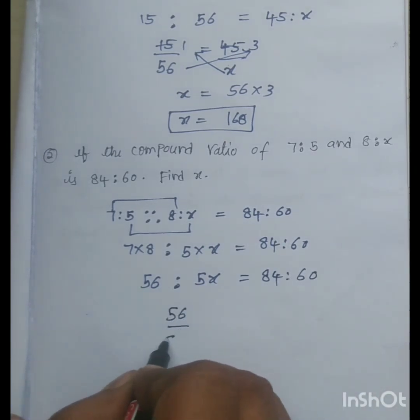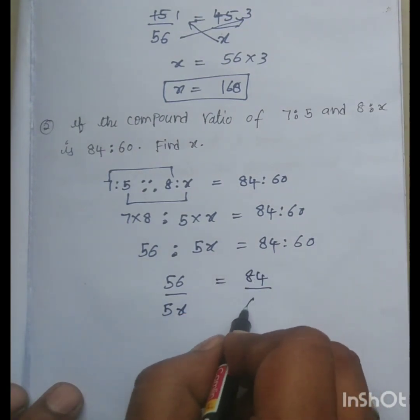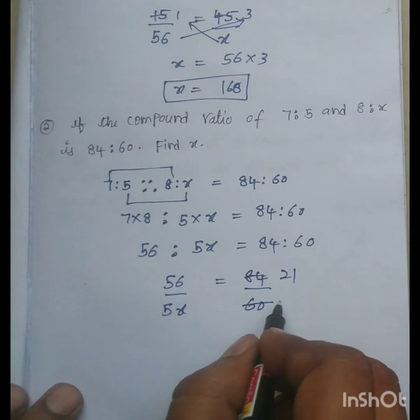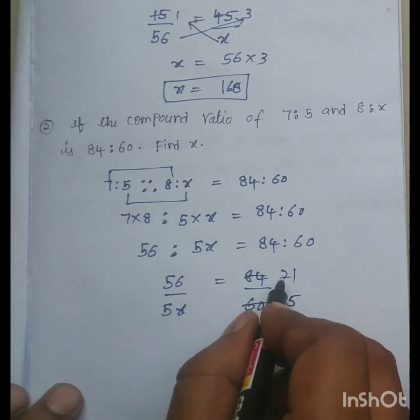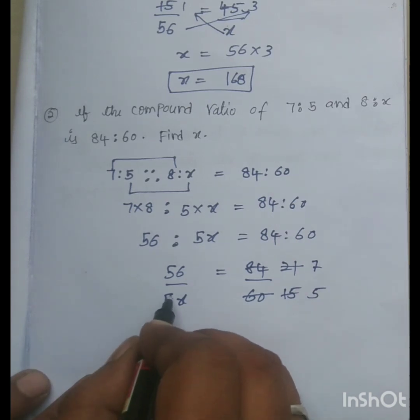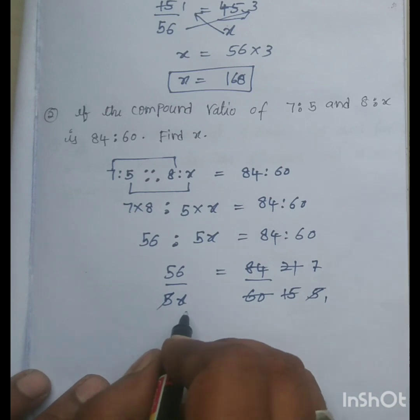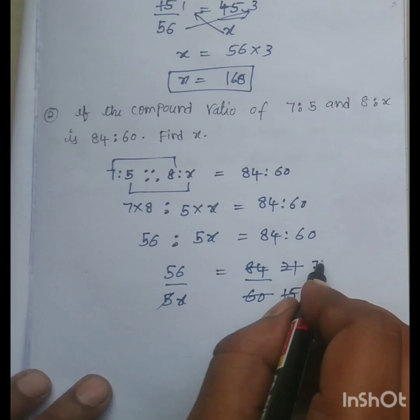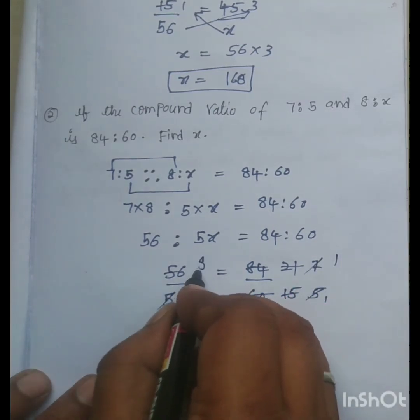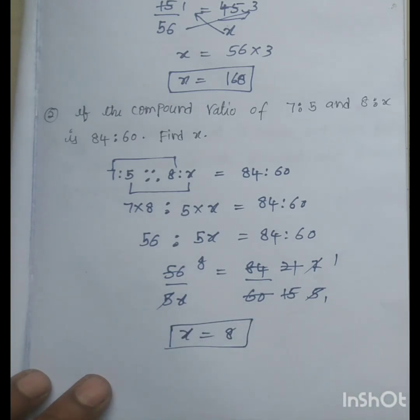We can write as 56 by 5X is equal to 84 by 60. 4 table, 4 times 4 is 2, 4 times 1 is 4, 4 times 15 is 3, 7 times 3 is 21, 3 times 5. So let us cancel this 5 and 5, so let us do cross multiplication or else let us cancel 7 table, now X into 1, X is equal to 1 into 8, 8. So, X value how much is? X value 8.